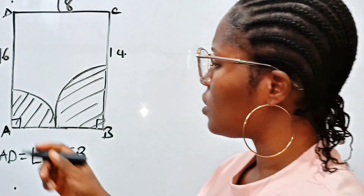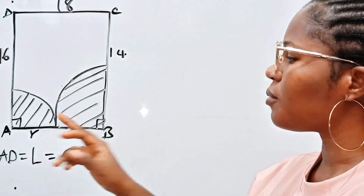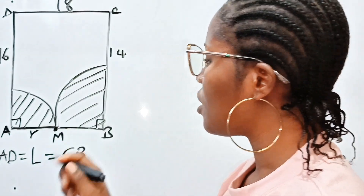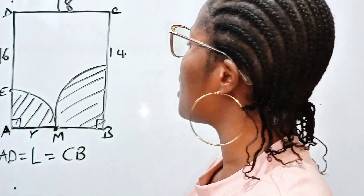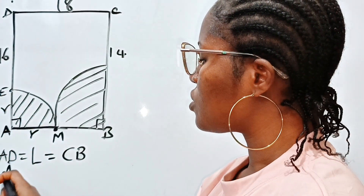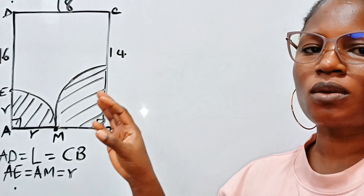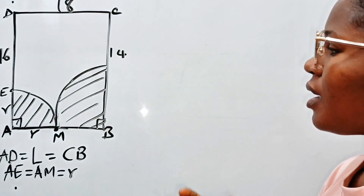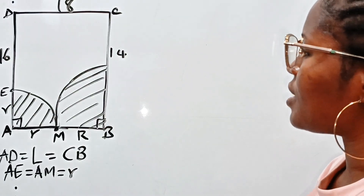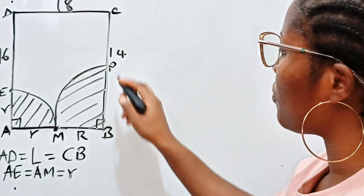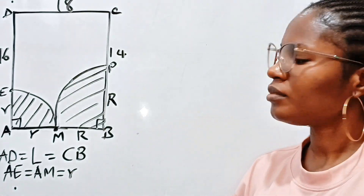Now let us call the radius of this smaller quadrant small r. If we call the meeting point M, then AM equals r. If we call this point E, then AE is also equal to r. So AE equals AM equals r, the radius of the smaller quadrant. Similarly, let us call the radius of the bigger quadrant capital R. If we call this point B, then BP is also equal to capital R.